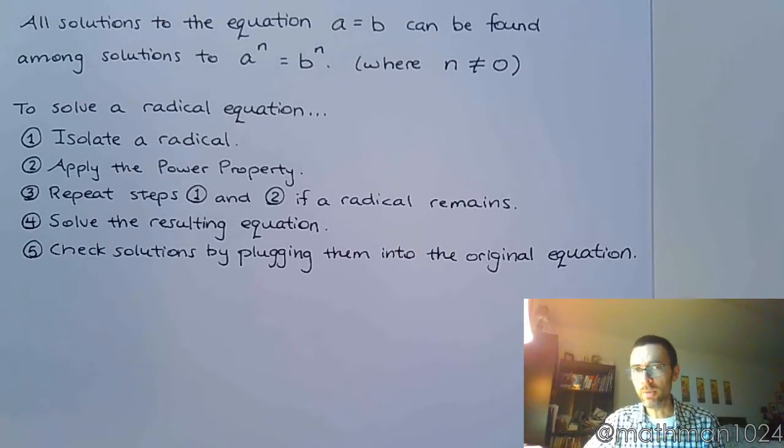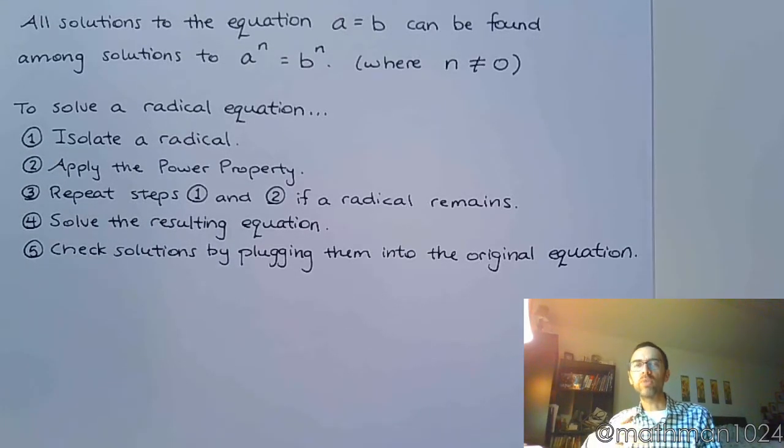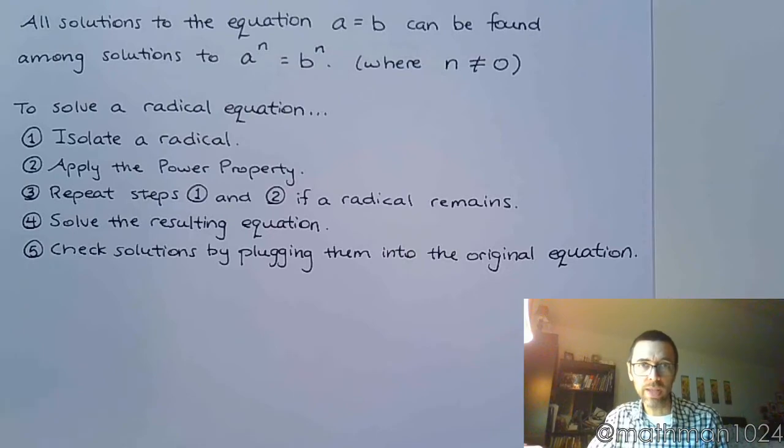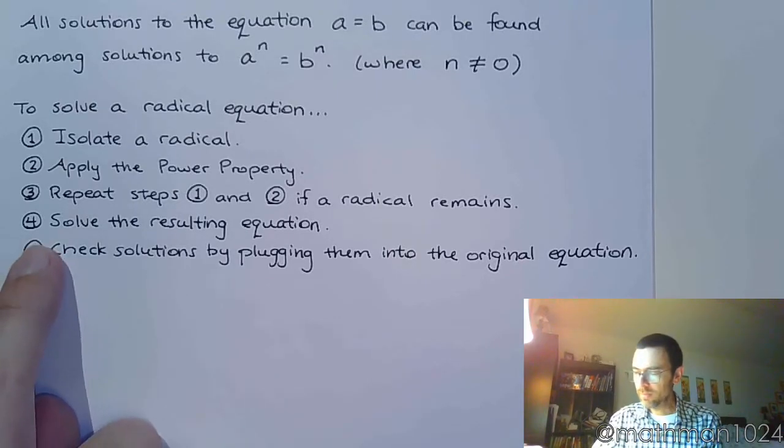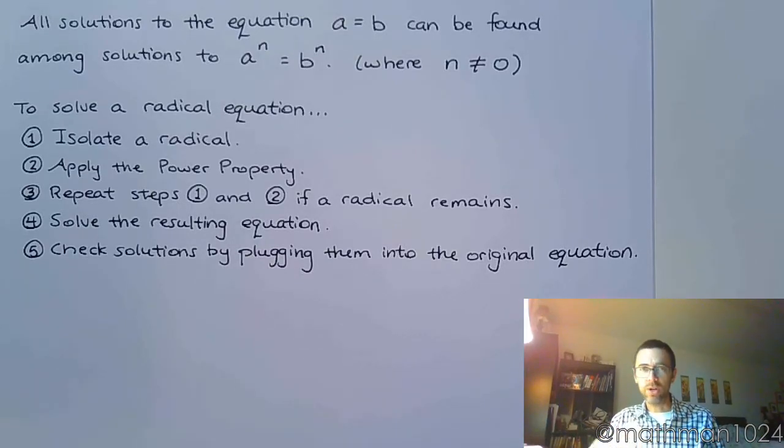After you do that, if you still have a radical left over, you've got to come back up here to step one and repeat the process. Isolate what's going to be hopefully just one more radical left and apply the power property again. Once all the radicals are gone, you're gonna solve the resulting equation - whether it's linear or quadratic or whatever. Then once you have your solutions, you check them back against your original equation just in case you come up with some kind of weird contradiction that leads to an extraneous solution.